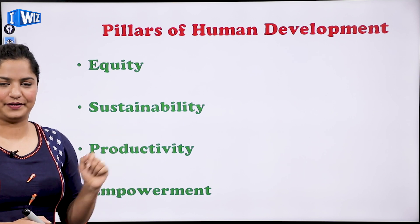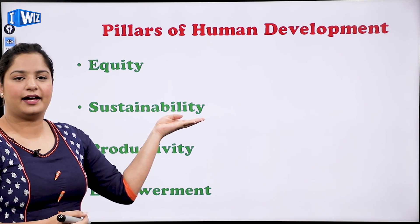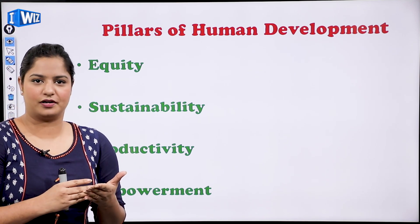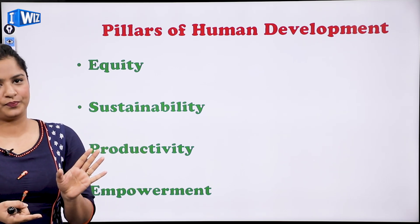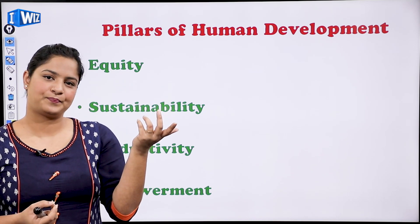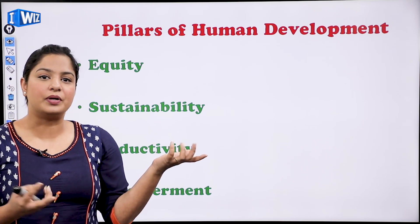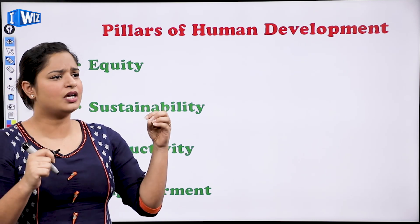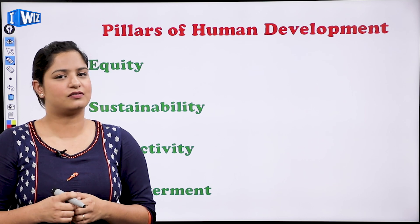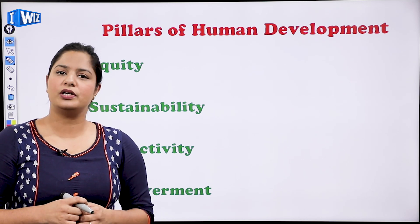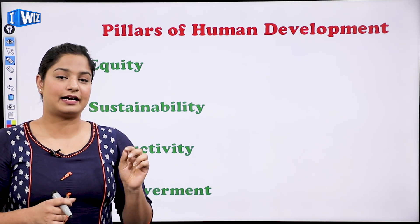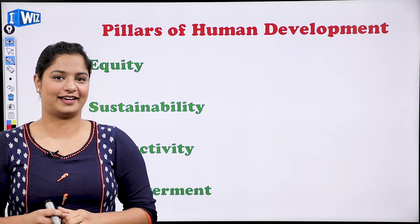Next is sustainability. Sustainability means that whatever I am using, I use it so wisely that my coming generations face no problem — they do not feel a shortage of that thing. For example, if we talk about fresh air — if we cause a lot of pollution, driving vehicles that release a lot of exhaust, that is not sustainability. I should use coal, petroleum, and diesel only as much as I need, so that my future generation will also be able to get those things. That is sustainability.